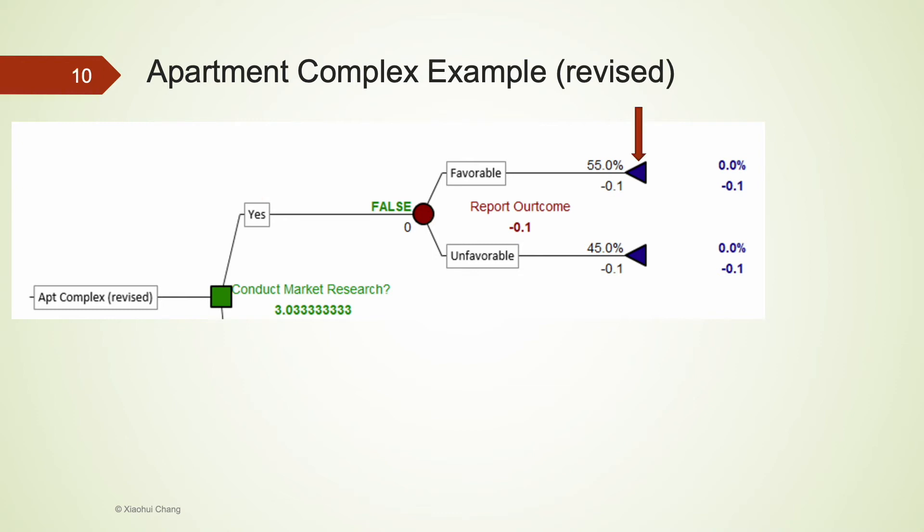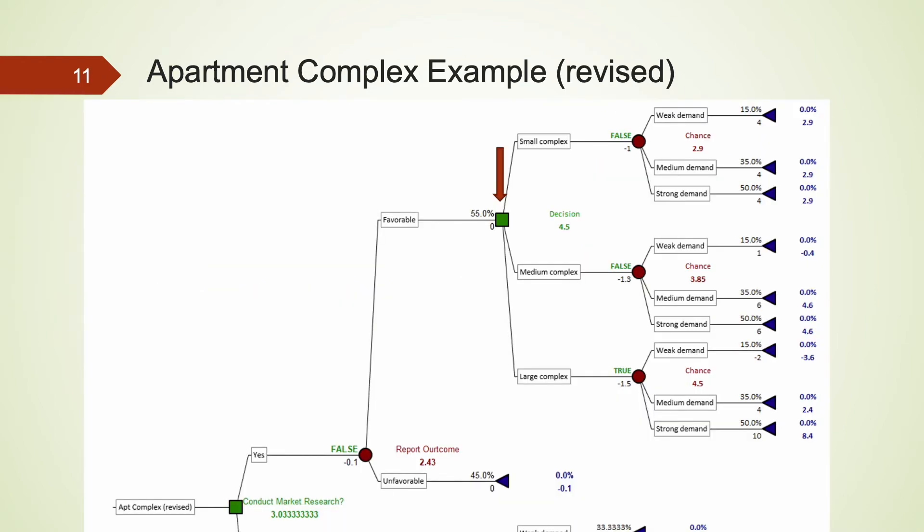Let's focus on the node after getting a favorable report. This would be a decision node where the company decides on the size of the apartment complex. The tree structure to the right of this decision node would be identical to the tree in the single stage example. The only difference would be the probabilities under the strong, medium, and weak demand are now different. This is because we have received a favorable market report.